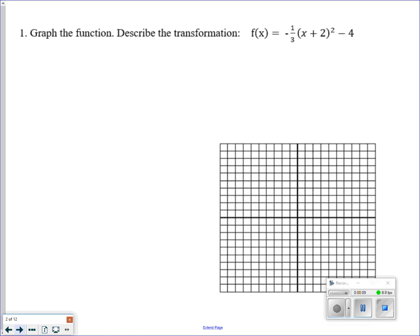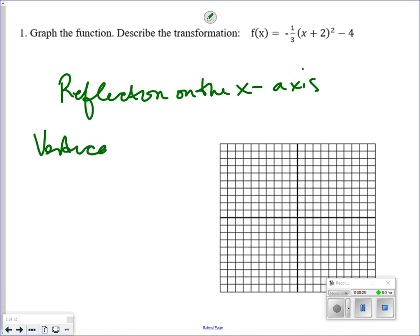Graph the function, describe its transformation. Let's first talk about describing. The negative sign out in front means a reflection on the x-axis. Multiplication out in front of the parentheses means you're talking about a vertical shrink by a factor of one-third.